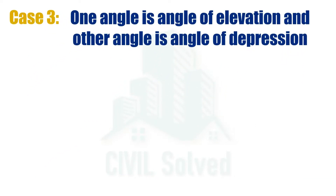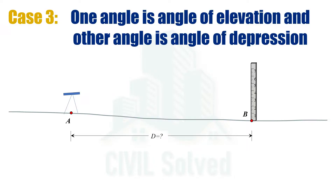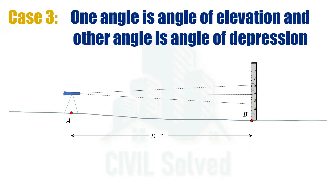Considering the same cross-section, in this case we can see that the cross-section is more or less flat. There are two points on the ground, A and B. At one point the staff is being placed, and at another point the instrument is being placed. The distance between them is required. The axis of the instrument is noted. The first angle is taken as the angle of elevation and the other angle is taken as the angle of depression. Let's consider the angle of elevation as θ₁ and the angle of depression as θ₂.